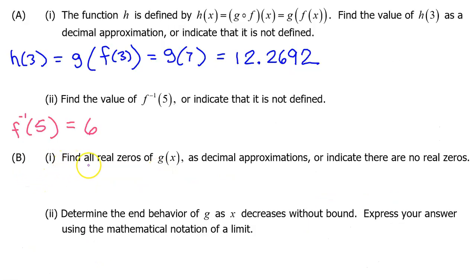Part B.1: Find all zeros of g of x as decimal approximations or indicate that there are no real zeros. The zeros of g are where g of x is equal to 0. So let's use the graphing calculator to find where g of x is equal to 0.